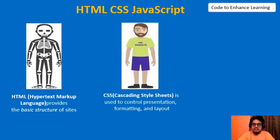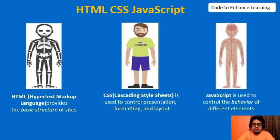CSS stands for Cascading Style Sheets. It adds styles like width, height, color, and alignment to our web page. JavaScript is used to control the behavior of different elements. JavaScript is a programming language, unlike HTML and CSS, which are commands to perform specific functions. JavaScript provides functionalities to the elements of a web page, like performing a task when a button is clicked.